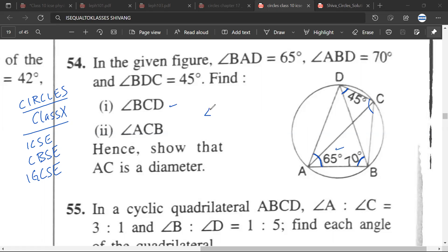If we take triangle DAB, then we are given 65 and 70. So 65 plus 70, we already have 135 here. How much are we left with? We are left with 45 degrees.